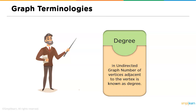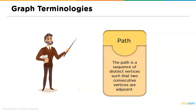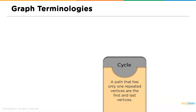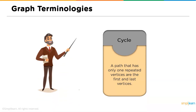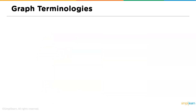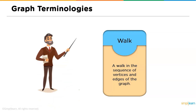Next is the path: a path is a sequence of distinct vertices such that two consecutive vertices are adjacent to each other. Up next we have the cycle: a path that has only one repeated vertex — the first and last vertices. Then we have the walk: a walk is a sequence of vertices and edges in the graph used to traverse from one vertex to another.